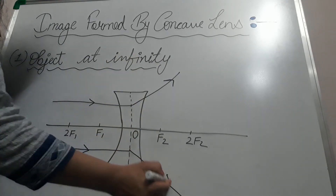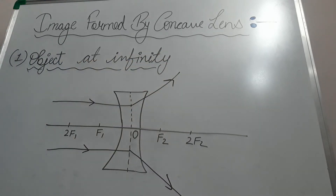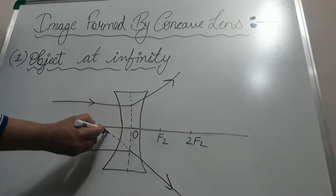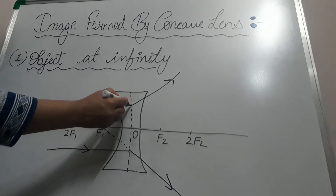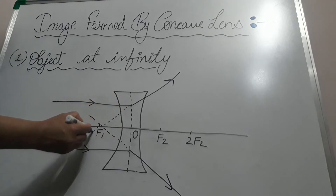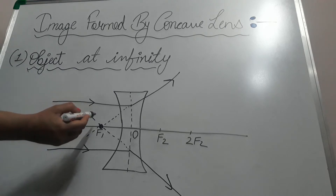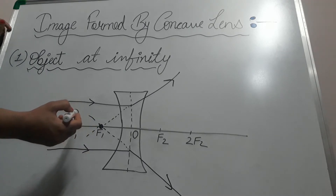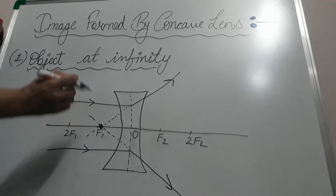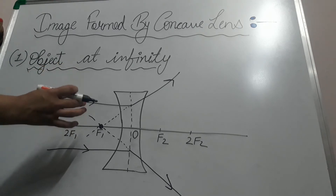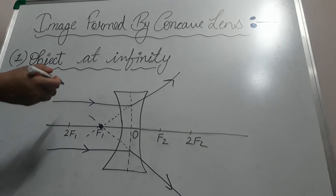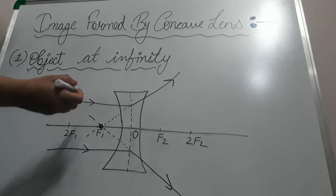Since this is a diverging lens, the rays will diverge and will not go through the focus. On this side the rays cannot meet, so we extend them to the back side. Where the extended rays meet — they meet on the focus point F1. So the image forms on the focus F1, on the same side as the object. It is very small, just like a point — a diminished, virtual image. When the image is virtual, it is always erect.